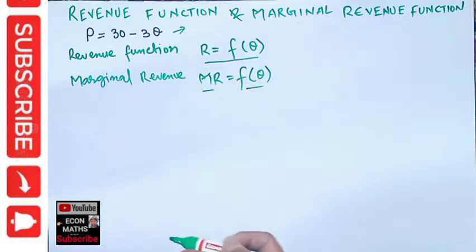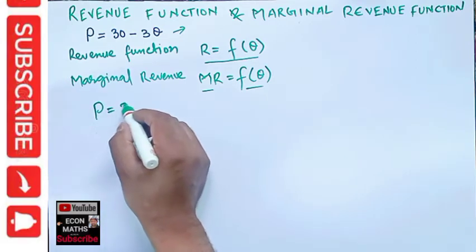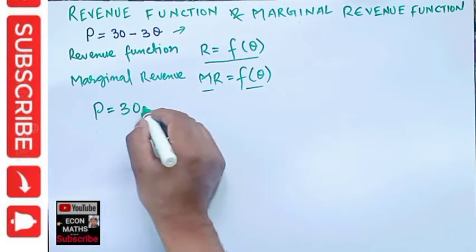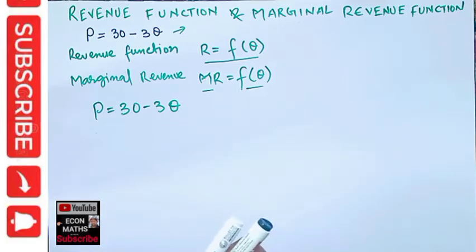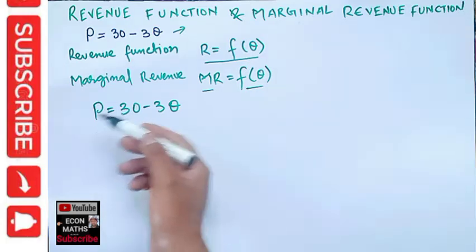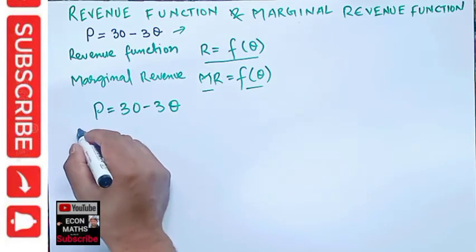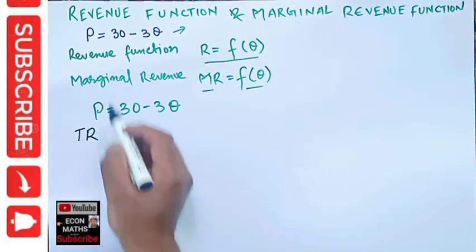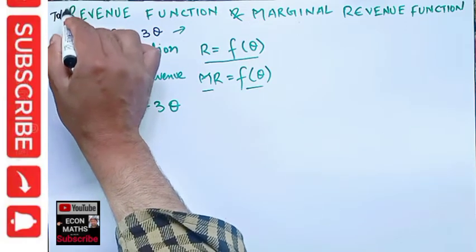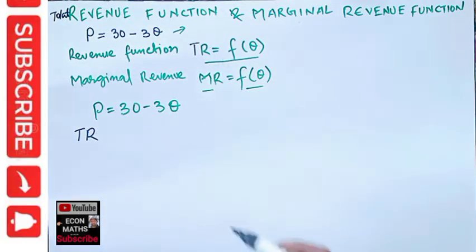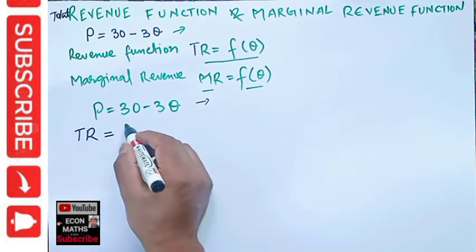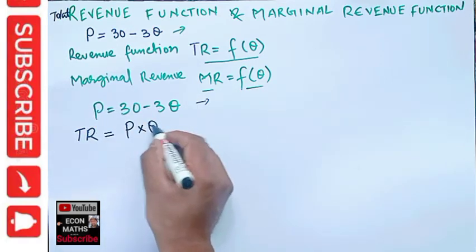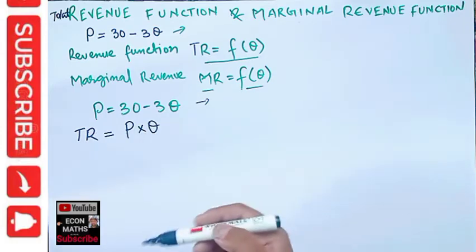Now, we are given the demand function: price is a function of quantity demanded, that is 30 minus 3Q. This is our demand function or inverse demand function. To find the revenue function from this, we denote total revenue. Total revenue is simply price times quantity — P times Q gives us the total revenue.